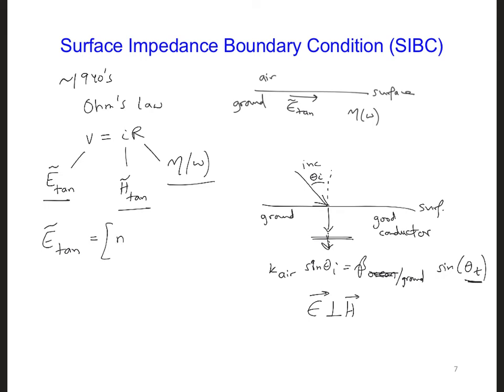If we take n hat, which is the surface normal, so this would be n hat, crossed with H tangential, this n crossed with H will make sure that we get the correct orientation for E tan. So I'm going to put eta as a function of omega.